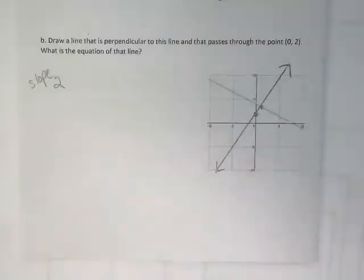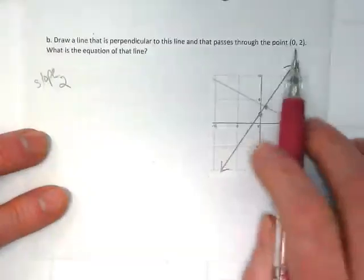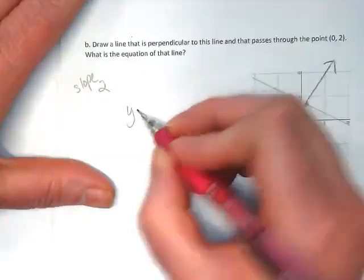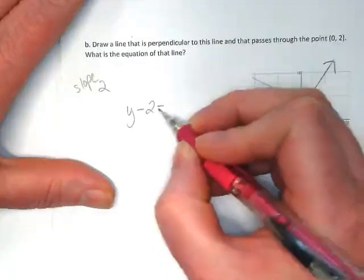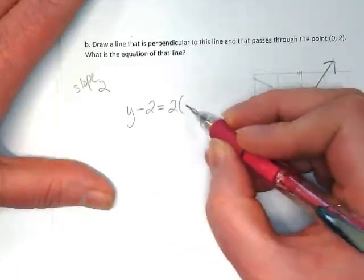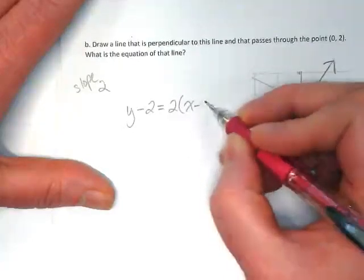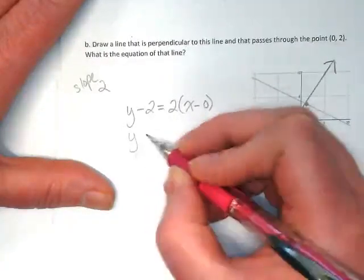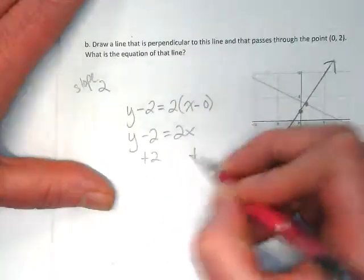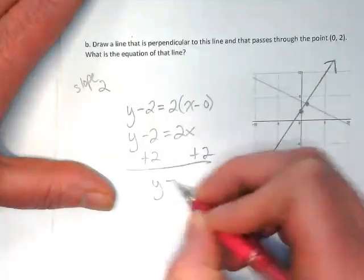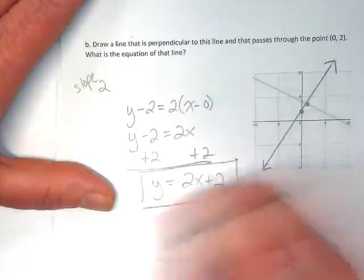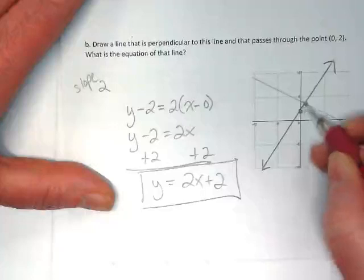So I did this by graphing it and knowing what the slope was and what one point was. I also could have used the point to find the equation by writing out point-slope form, which would give us plus 2 and a slope of 2.